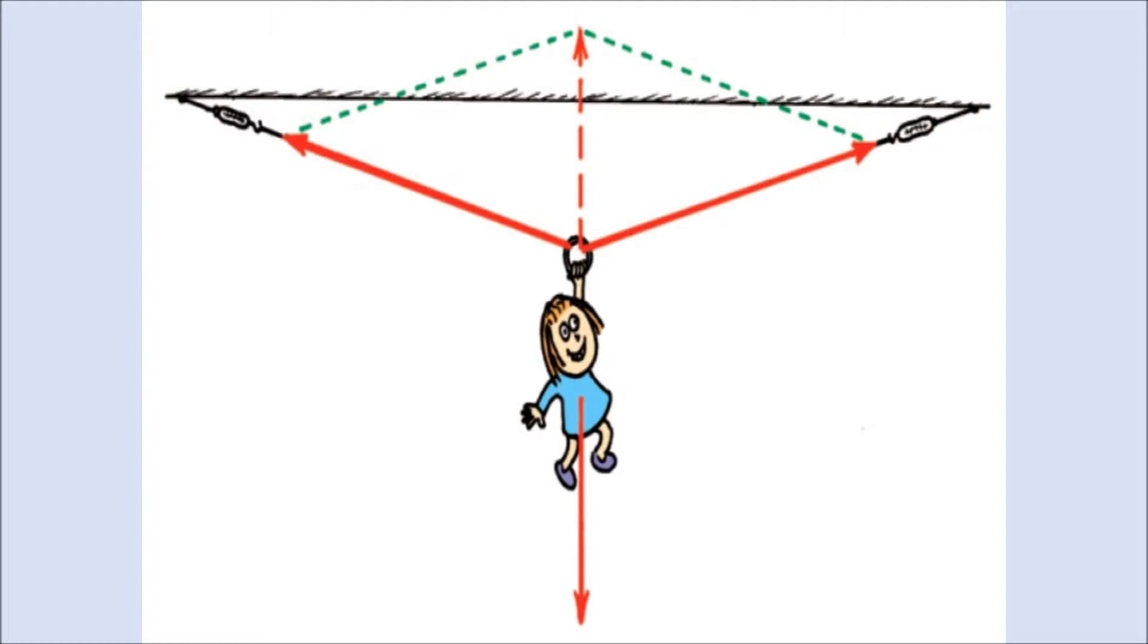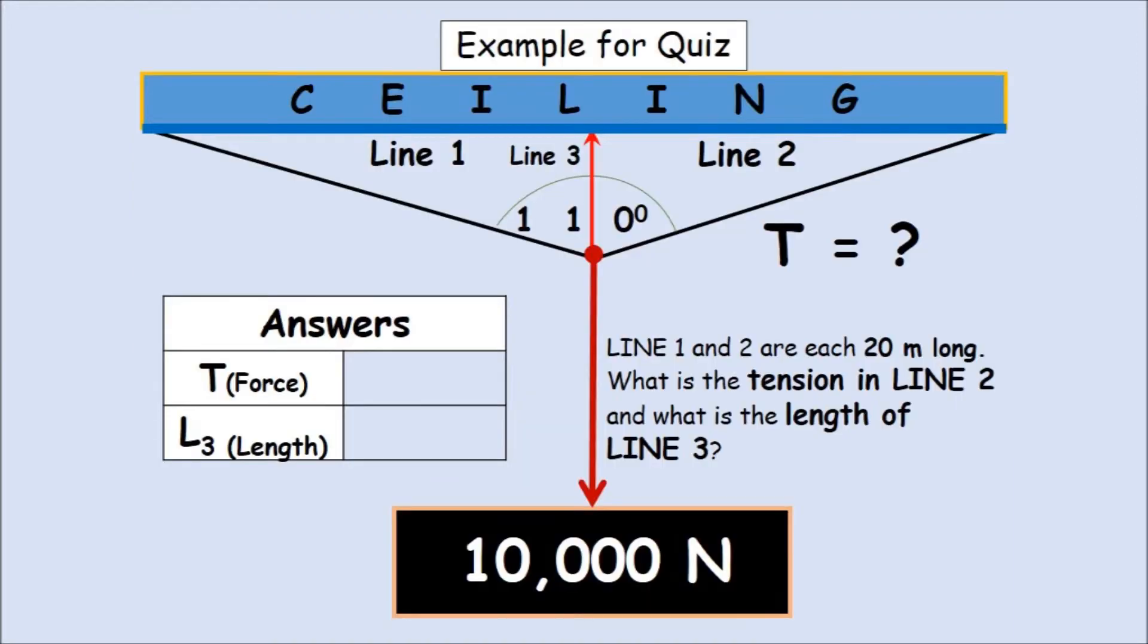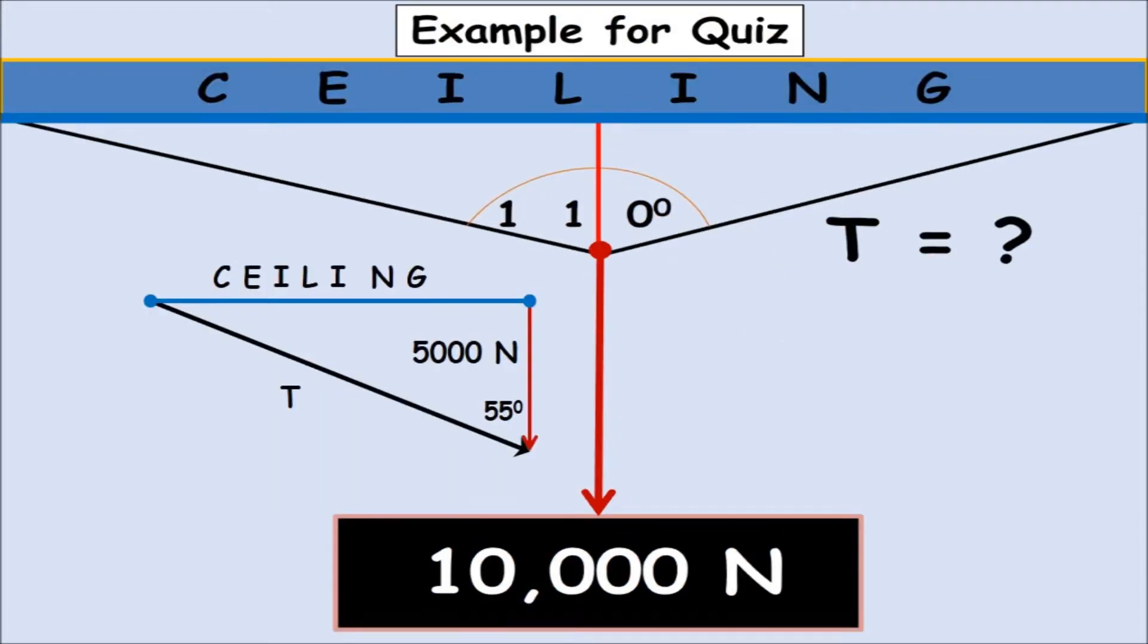Let's look at an example of that, where we have some data to put in. Let's say you have 10,000 newton weights pulling straight down. You have this make-believe line 3, and you have two of them, actually, because you have one for each string. Remember, it's half of the weight. So each vertical make-believe line would be half. So the question is, what is the tension in t, and what is the length of line 3? Well, let's do the tension first.